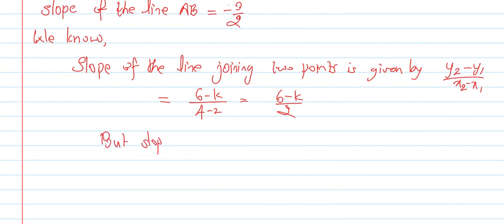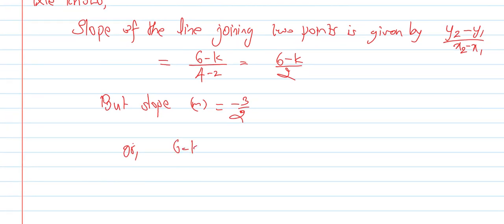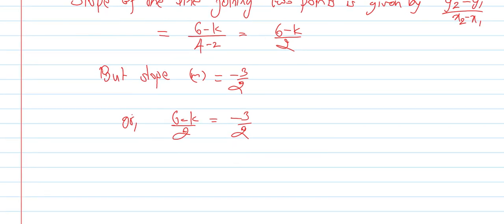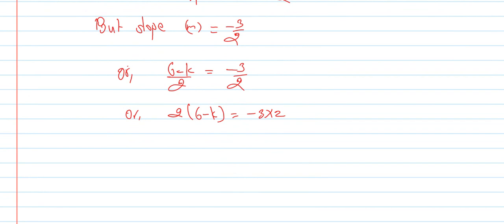Slope is minus 3 by 2, so (6 - k) by 2 equals minus 3 by 2. Cross multiply: 2(6 - k) equals -3 times 2. So 6 - 2k equals -6.